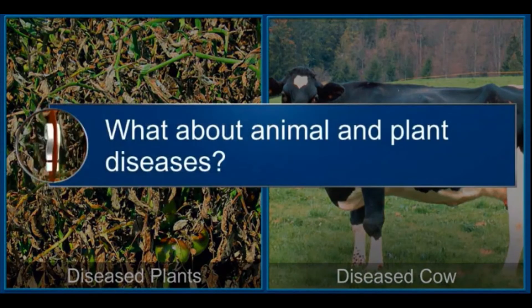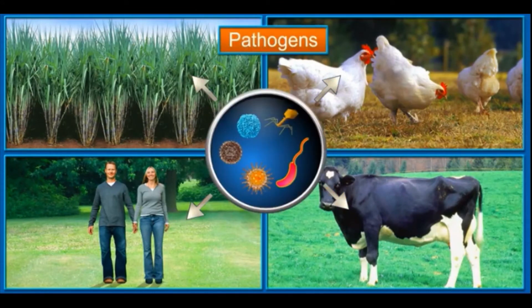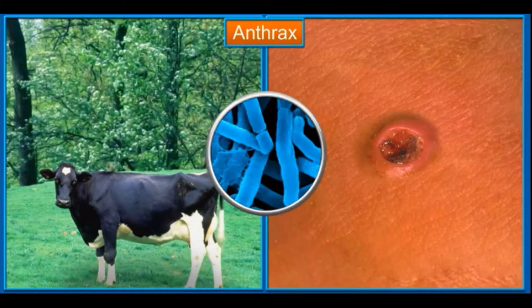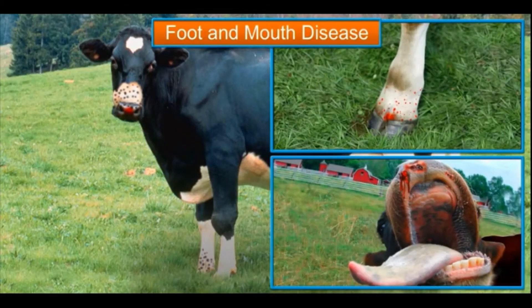Several pathogens cause diseases in animals and plants along with humans. For example, anthrax, caused by a bacterium, is a dangerous human and cattle disease. Foot and mouth disease in cattle is caused by a virus.